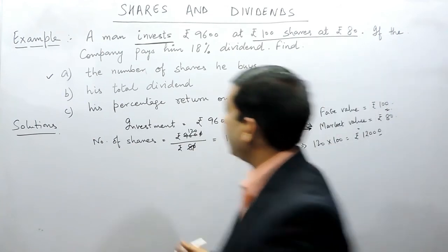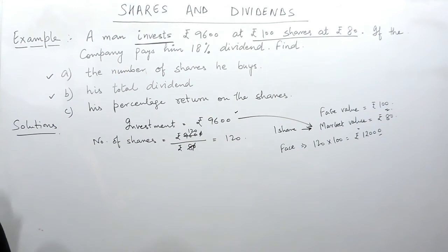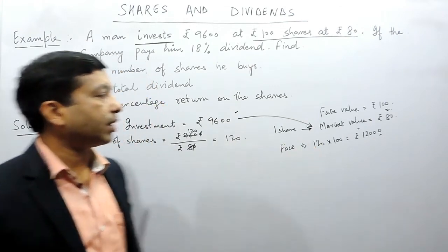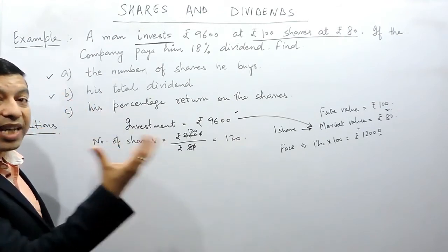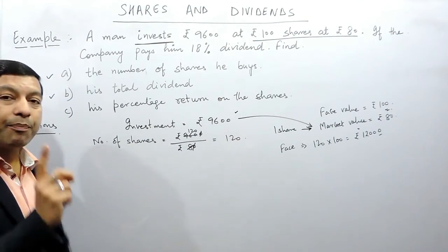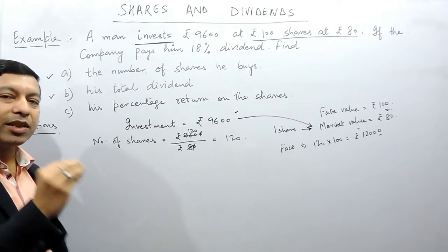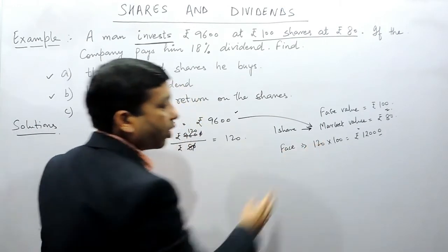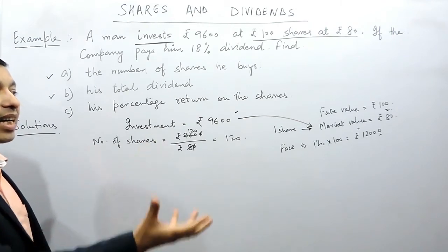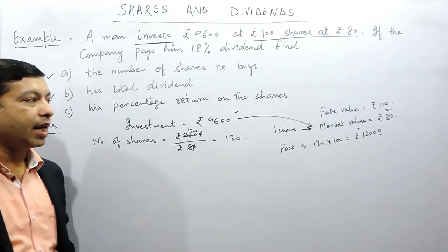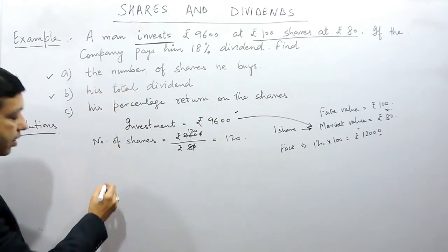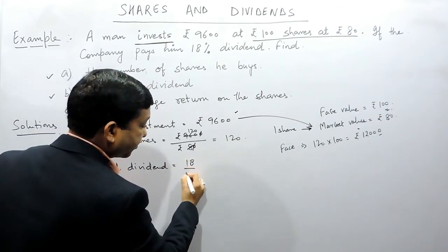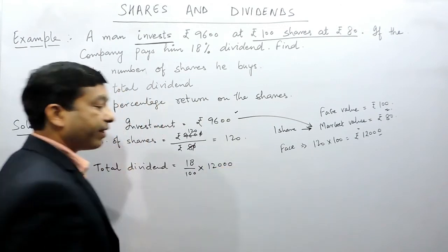Part B is his total dividend. He invested rupees 9,600 and purchased 120 shares for which the face value totals rupees 12,000. The company will pay the dividend on the face value, because the company is only concerned with how much money he has invested in the company. With a face value of rupees 100 across 120 shares, the person effectively invested rupees 12,000 in the company, and will get the dividend on rupees 12,000.